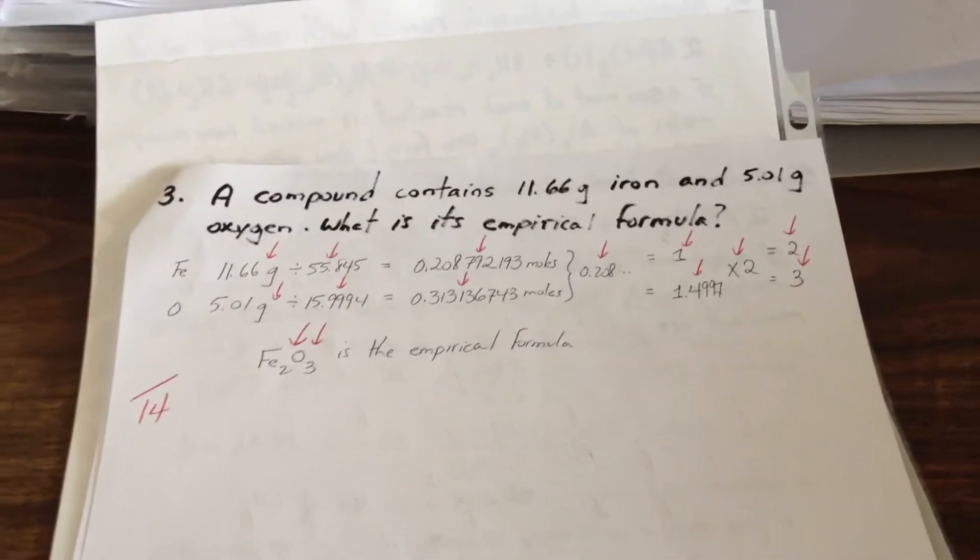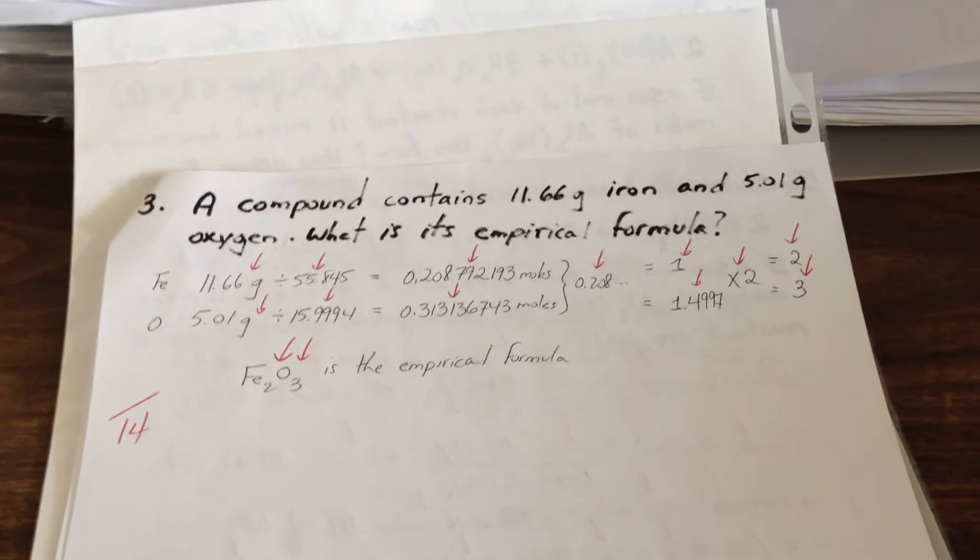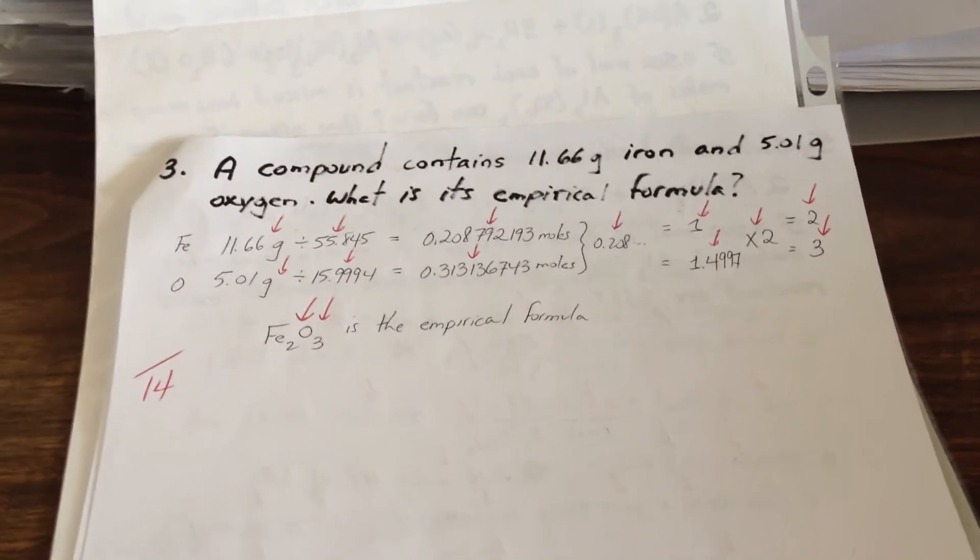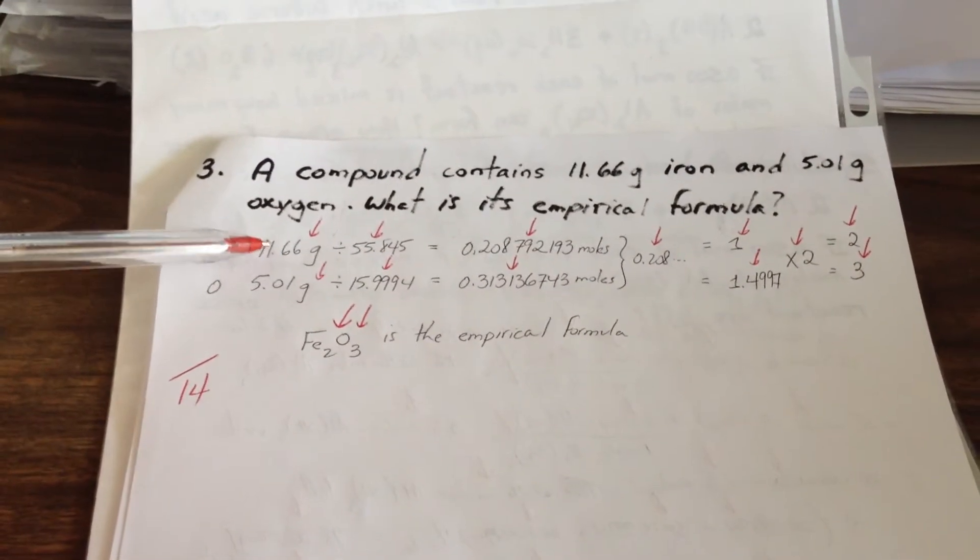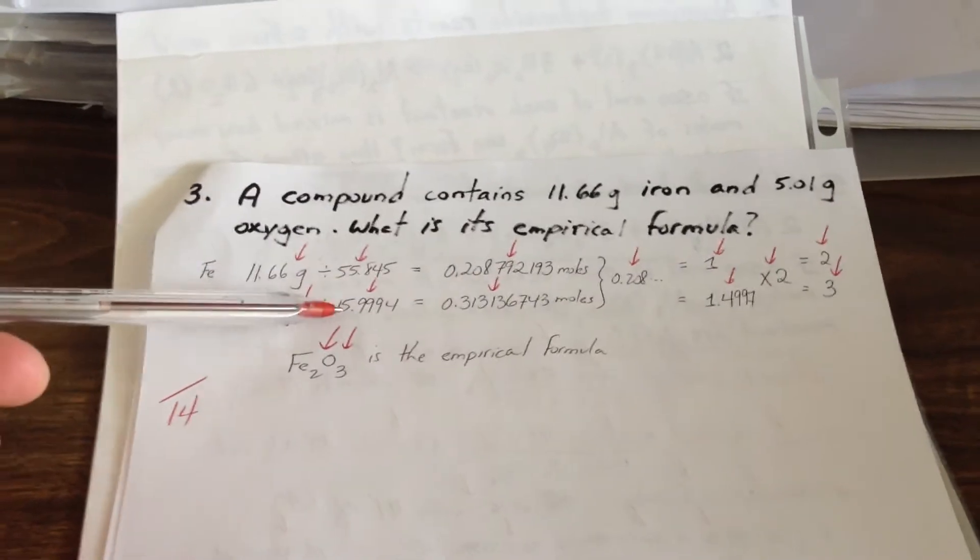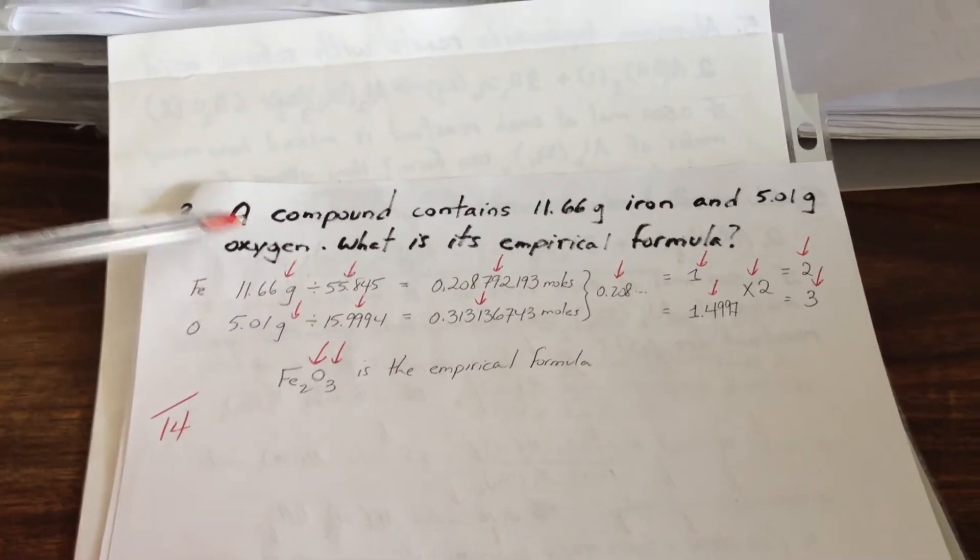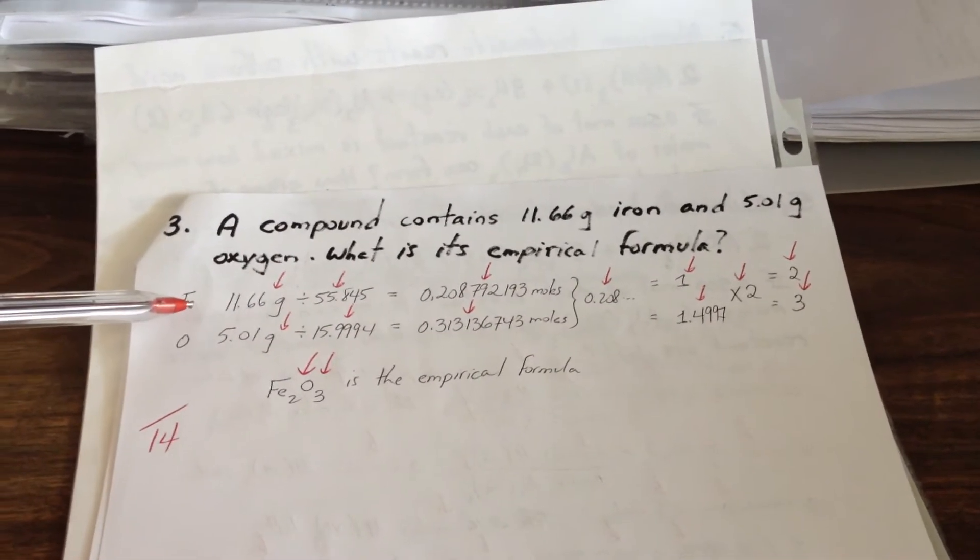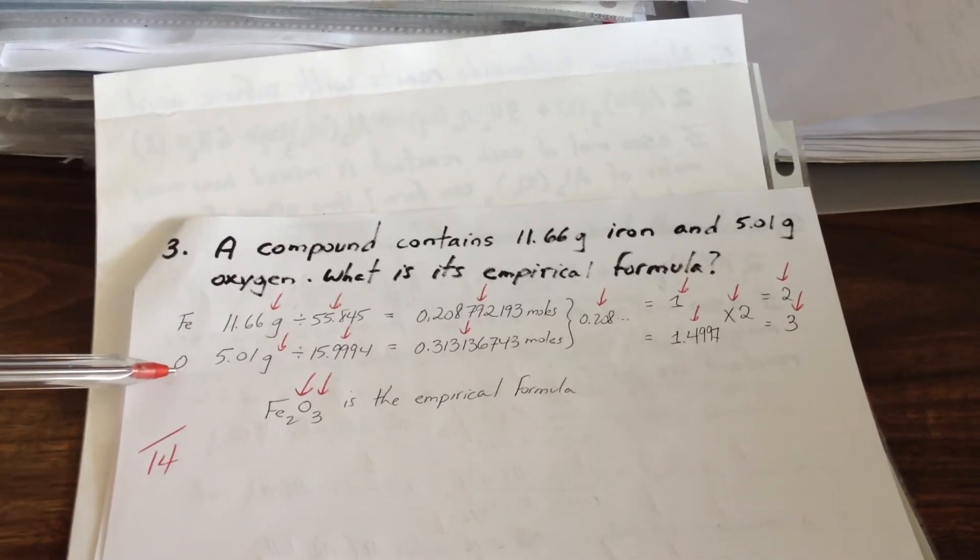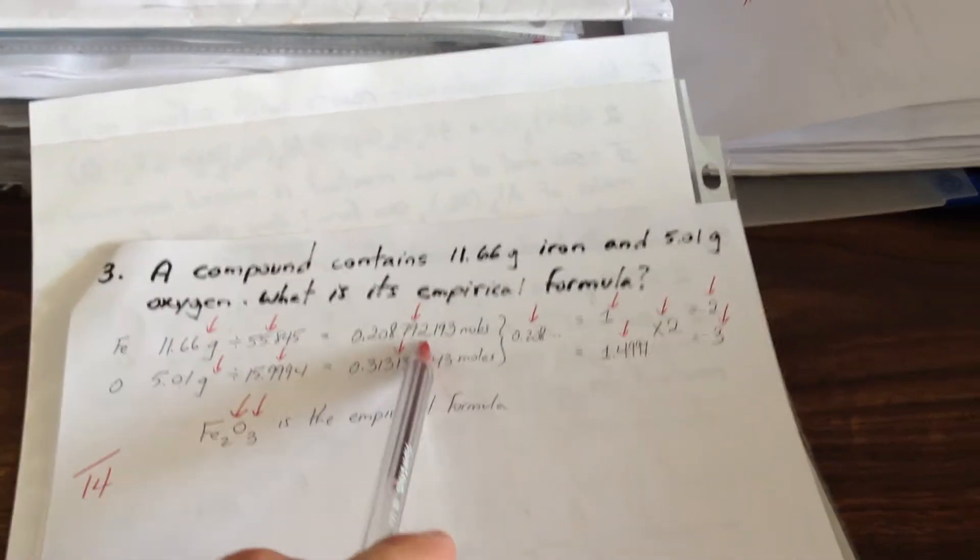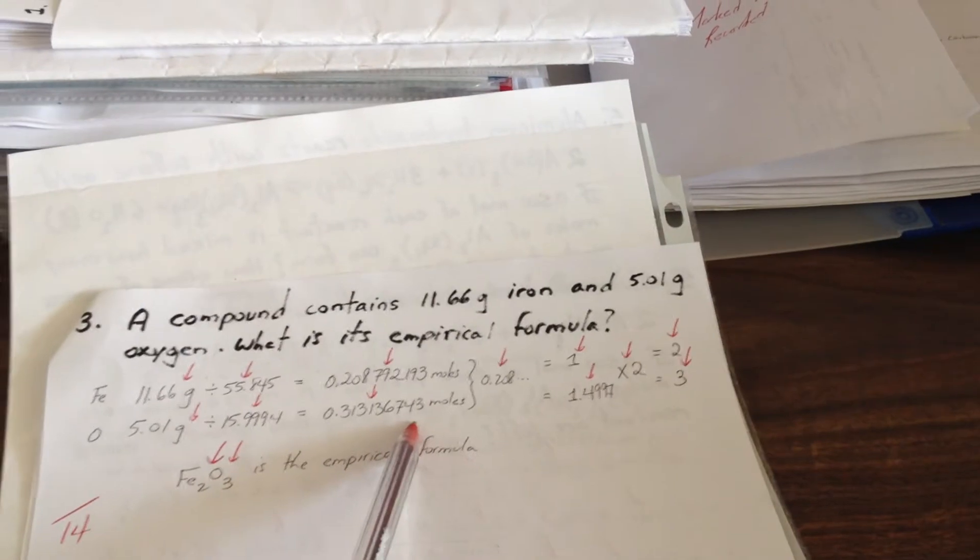Third question. A compound contains 11.66 grams of iron and 5.01 grams of oxygen. What is its empirical formula? We start off with the gram amounts. Divide by the molar mass of each one of the elements involved. So the molar mass of iron is 55.845. Molar mass of oxygen is 15.394. Here are the moles represented for each of the elements.